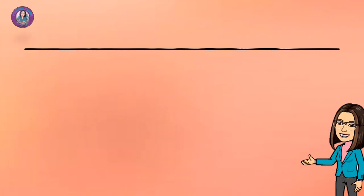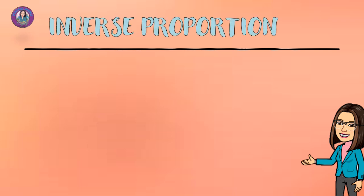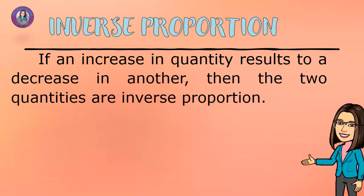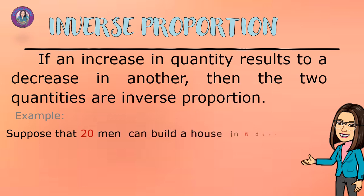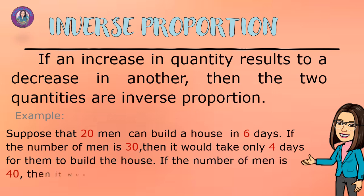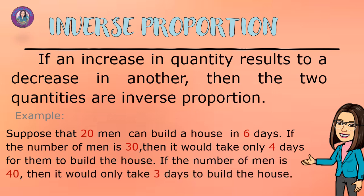Another kind of proportion is inverse proportion. If an increase in quantity results in a decrease in another, then the two quantities are in inverse proportion. For example, suppose that 20 men can build a house in 6 days. If the number of men is 30, it would take only 4 days. If the number of men is 40, it would only take 3 days to build that house.